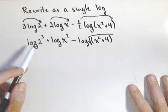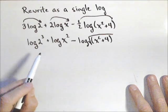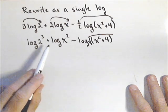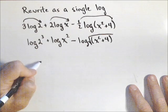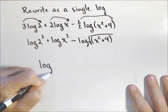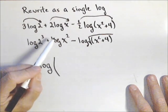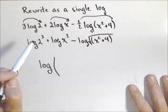Now we can go ahead and write these as products or quotients. If it's plus, it's a product. So we're going to write this all as a single log. If it's plus it goes on top, if it's minus it goes on bottom.